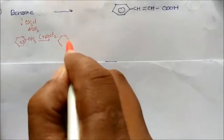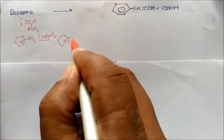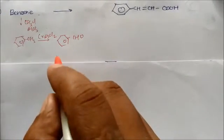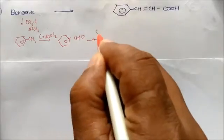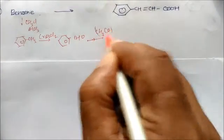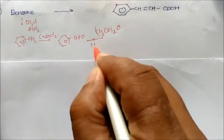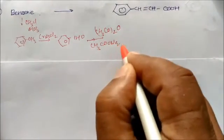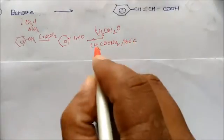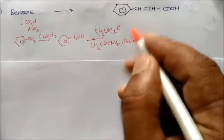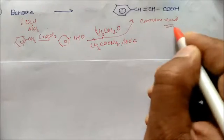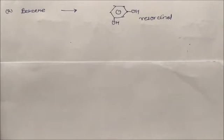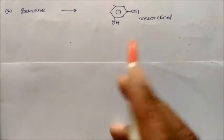For benzene to cinnamic acid: first convert benzene to benzaldehyde using chromyl chloride (CrO2Cl2). Then react benzaldehyde with acetic anhydride (CH3CO)2O in presence of sodium acetate at 180 degrees centigrade. This is the Perkin reaction, giving cinnamic acid.